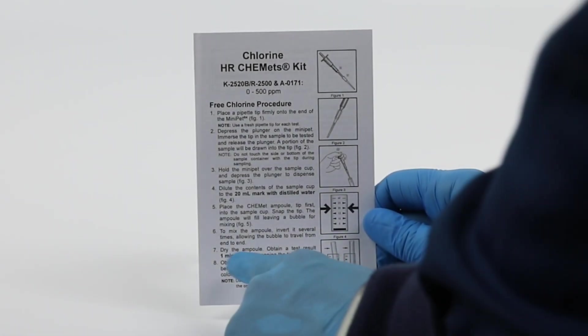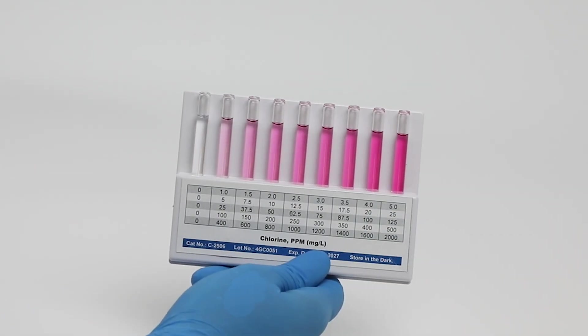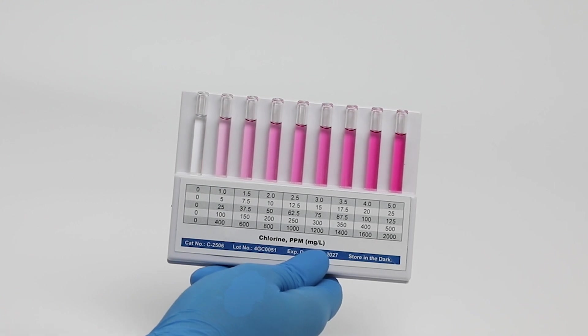Allow the color to develop for the time as directed in the instructions. Once the color development time has elapsed, immediately compare the test ampule to the color comparator provided in the HR-Comets test kit.